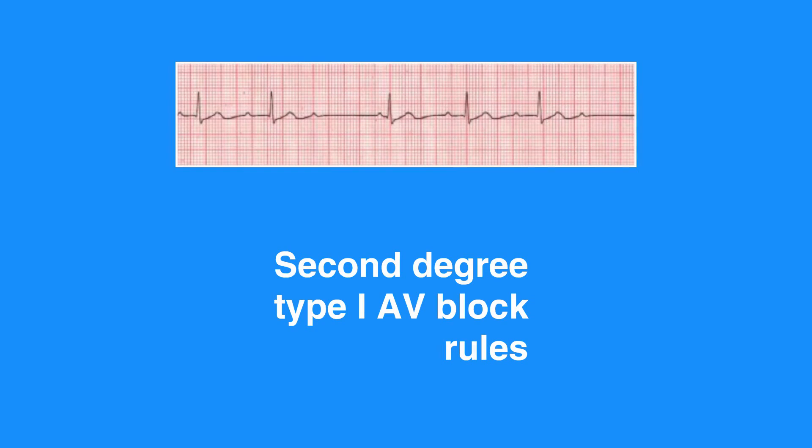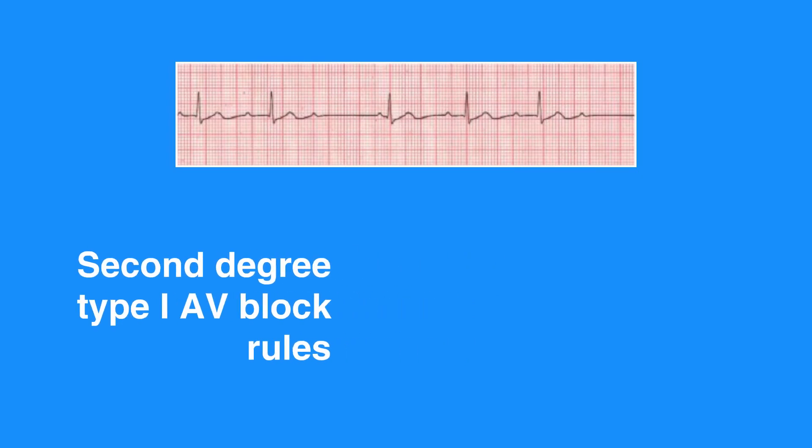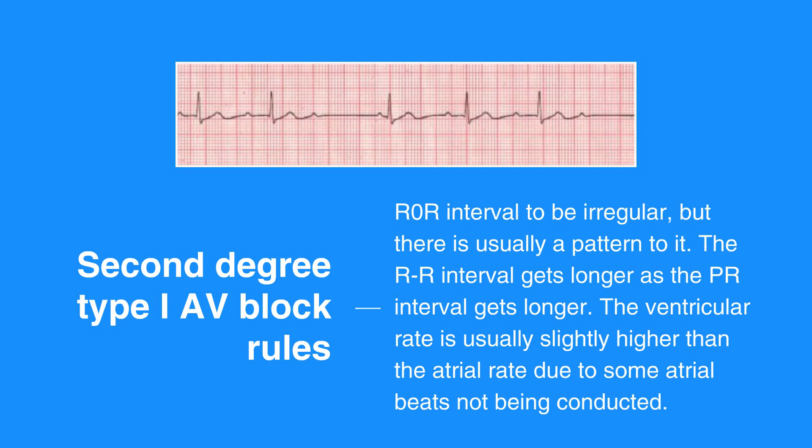Second degree type 1 AV block rules include an RR interval that is regular, but there is usually a pattern to it — the RR interval gets longer as the PR interval gets longer. The ventricular rate is usually slightly lower than the atrial rate due to some atrial beats not being conducted. The atrial rate is usually normal. P waves are upright and uniform. Most complexes will have a P wave in front of them; however, there will be some that don't. The PR interval gets progressively longer until there is a dropped QRS complex. The QRS complex measures less than 0.12 seconds.